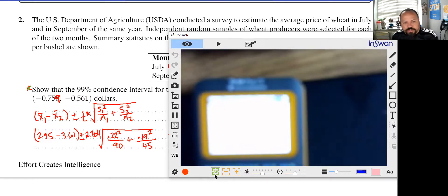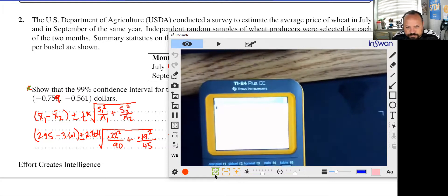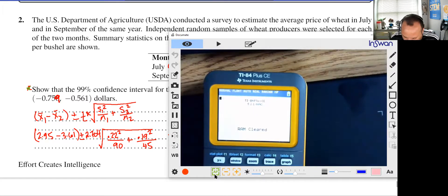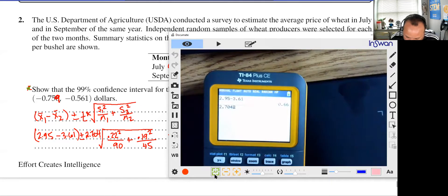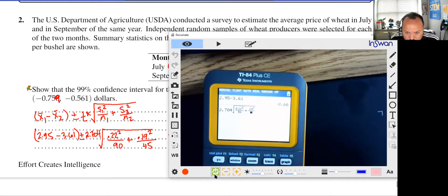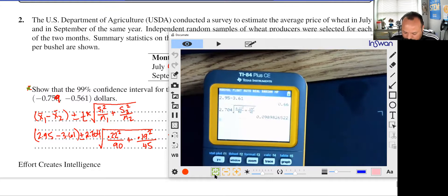it's 2.95 minus 3.61. We're going to need that value. Let's see here. Looks a little bit better. So I'm going to have 2.95 minus 3.61. So I'm going to need that value, negative 0.66. I'm also going to need 2.704 times the square root of, and I'll have a fraction, 0.22 squared over 90, and then plus another fraction, and that's going to be 0.19 squared all over 45. And I'm going to need this value. And so that's about 0.099, we'll say.